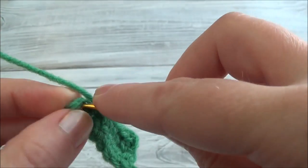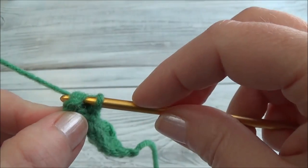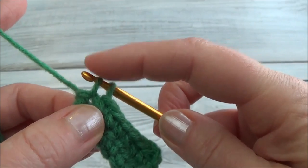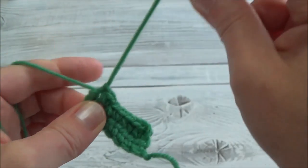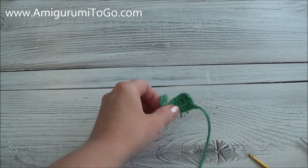Now we put one half double crochet in the first three stitches. Yarn over, skipping that chain we made, one two, starting right here, half double crochet in the next three. And now we slip stitch the last stitch and finish off.